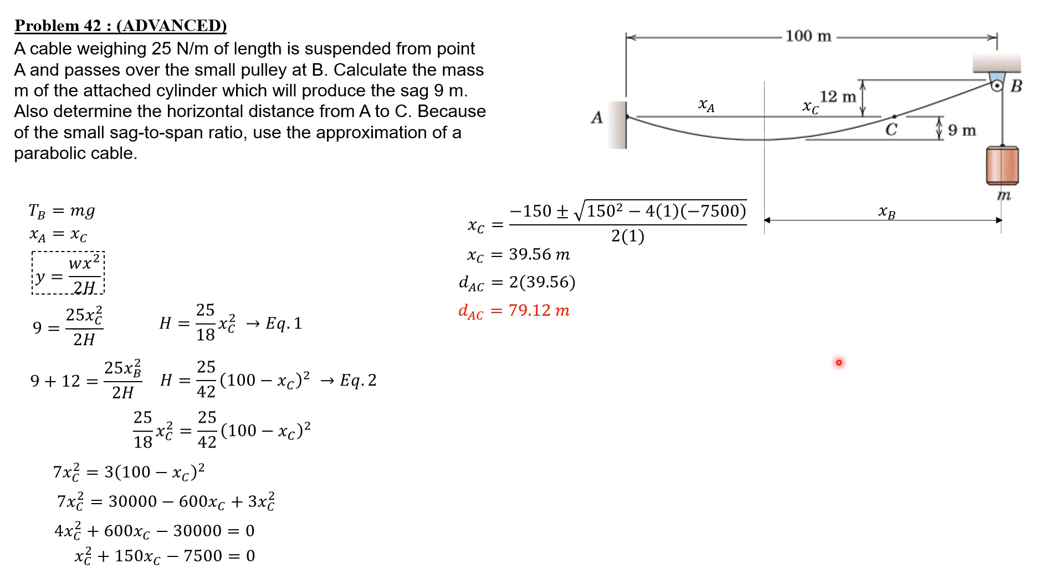We need the tension at B, which is square root of H squared plus the vertical component of reaction at B squared. The vertical component of tension at B is the weight of the cable from the lowest point up to B.